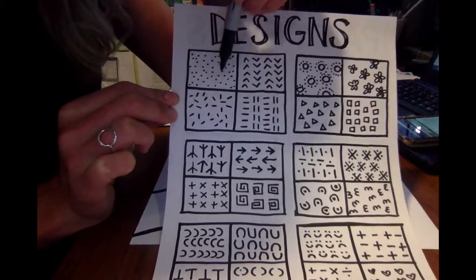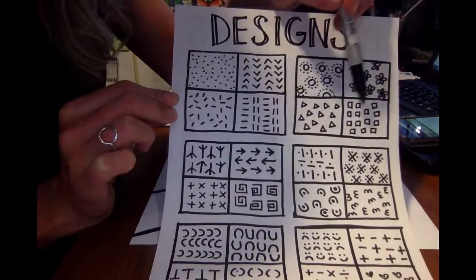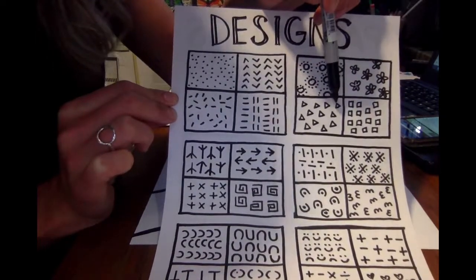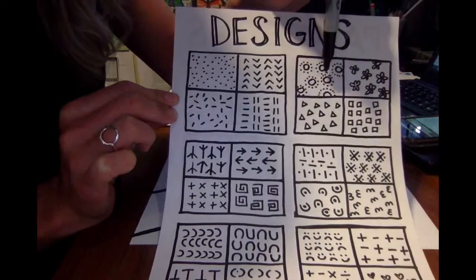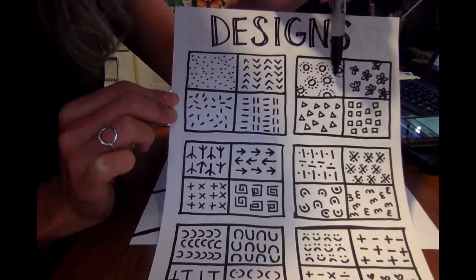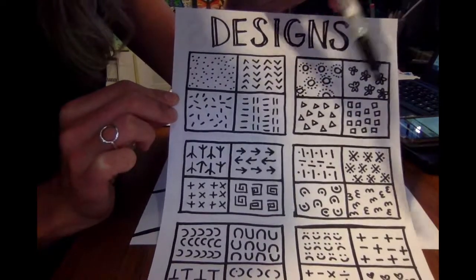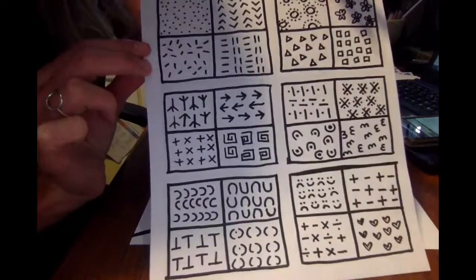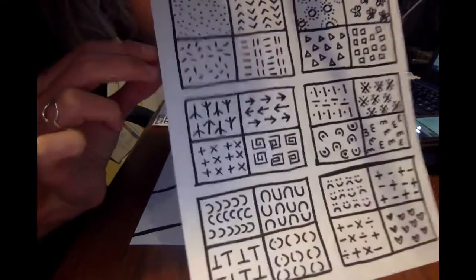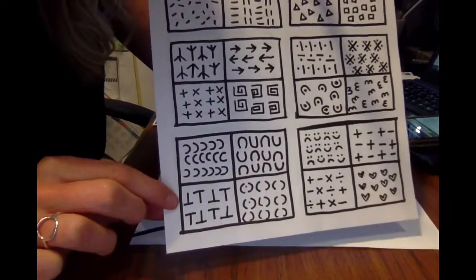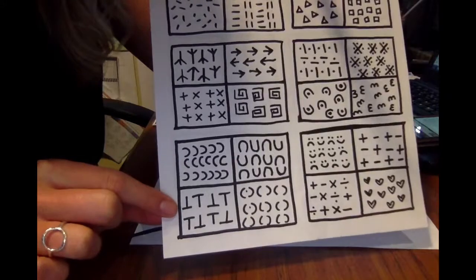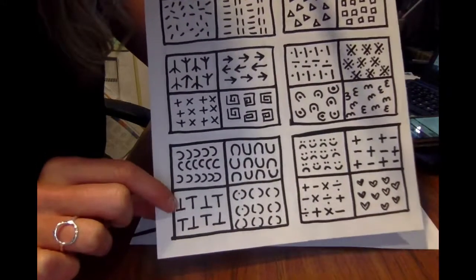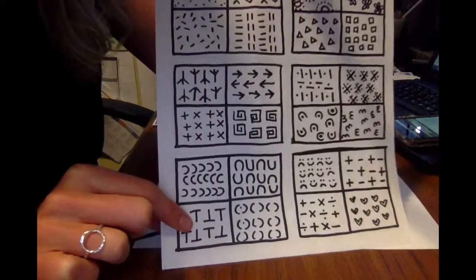You can even incorporate shapes into your Zentangle project. Here I just did a simple triangle. Here I did a simple circle and I started mixing some designs around it. So use this worksheet to help you out. I've also said in the past, even sometimes letters can be used as a design. I know this is a letter T but I've used it upside down and it kind of looks like an interesting pattern.